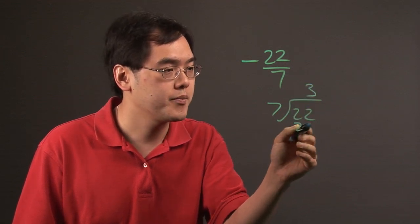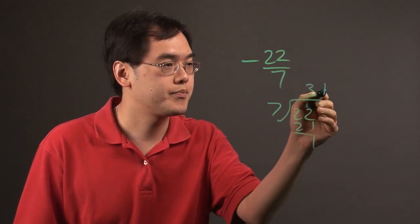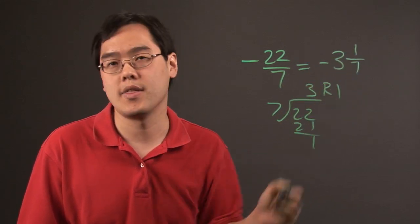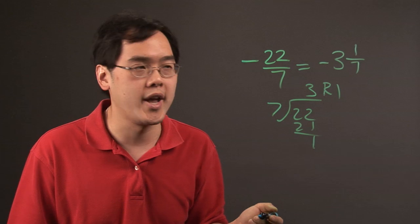So 7 goes into 22 three times, remainder 1. So that means that negative 22 sevenths is negative 3 and 1 seventh. So that's one way of reducing an improper negative fraction.